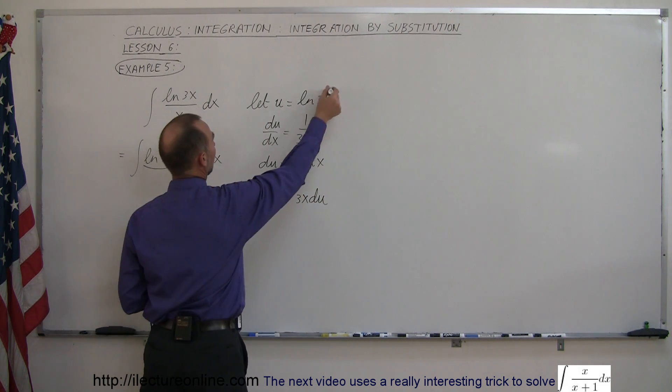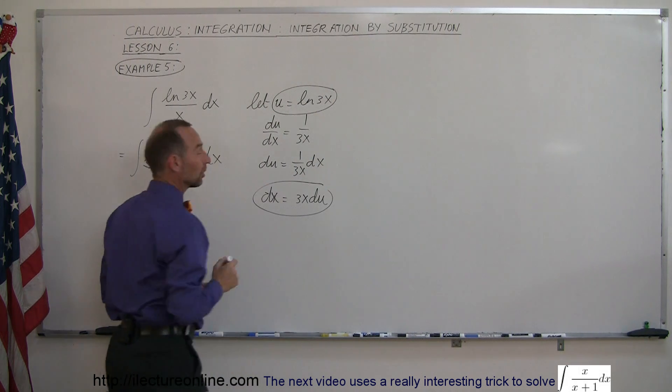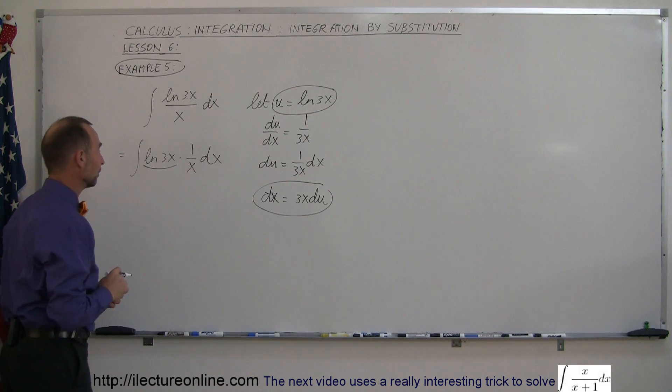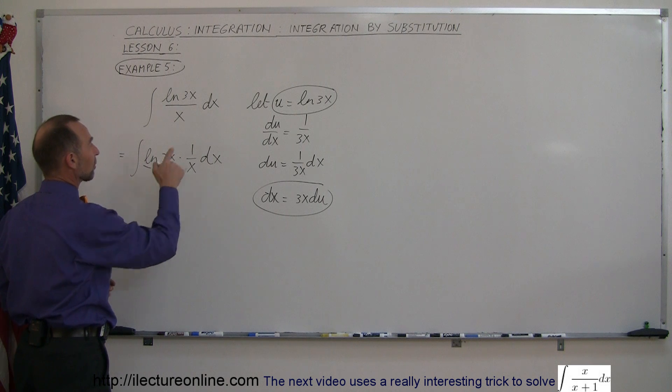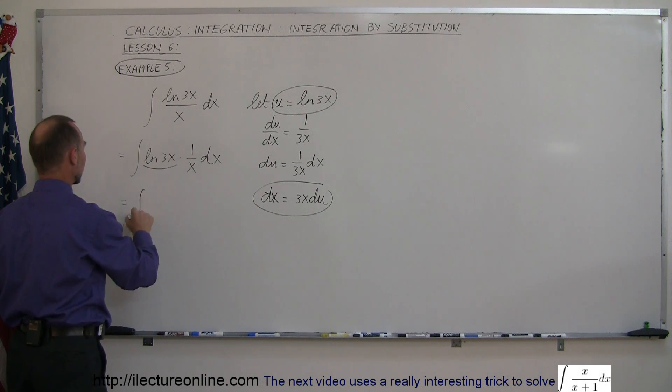And then we can substitute this and this inside our integral sign. Let's see what we end up with. So the natural log of 3x can be replaced by u, so this equals the integral of u.